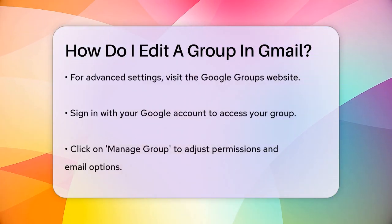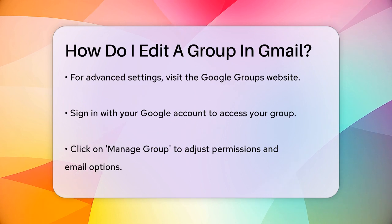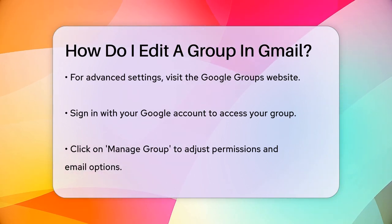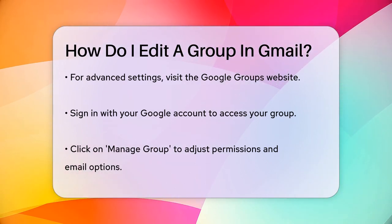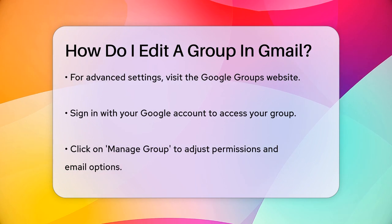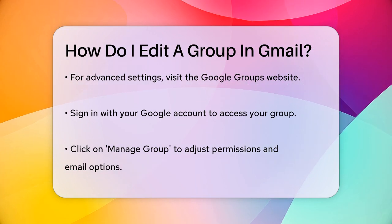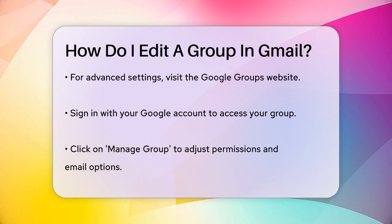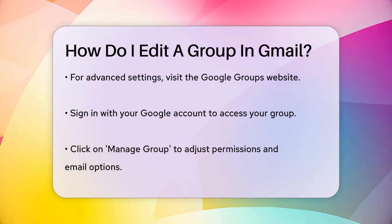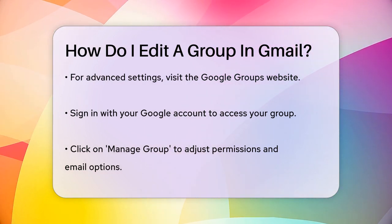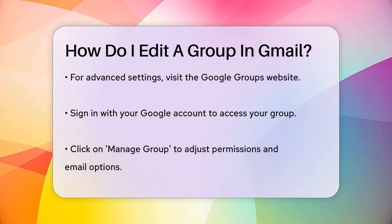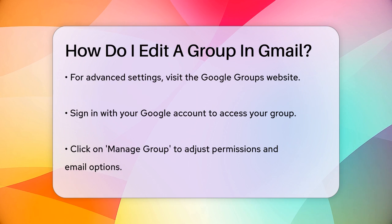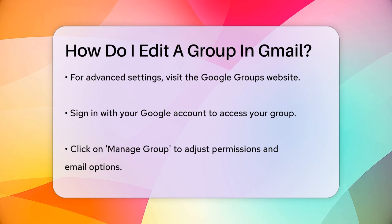For more detailed settings, if you're using Google Groups, you can manage permissions, email options, and access settings. To do this, go to the Google Groups website, sign in with your Google account, and navigate to your group. Click on Manage Group and use the left sidebar to adjust settings like who can join, post, or see the group's content.